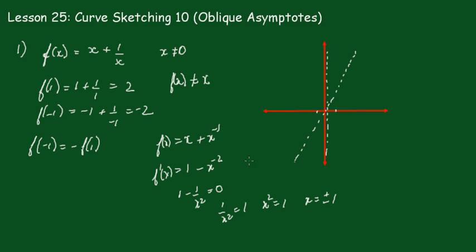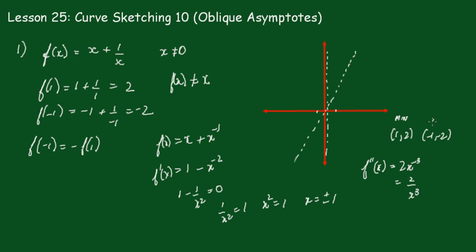At x = 1, f(1) = 2, and at x = -1, f(-1) = -2, so the stationary points occur at (1, 2) and (-1, -2). The second derivative f''(x) = 2x⁻³ = 2/x³. At x = 1 it's positive, so that's a minimum; at x = -1 it's negative, so that's a maximum.